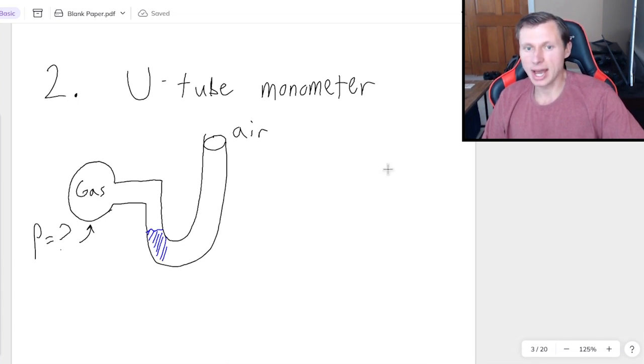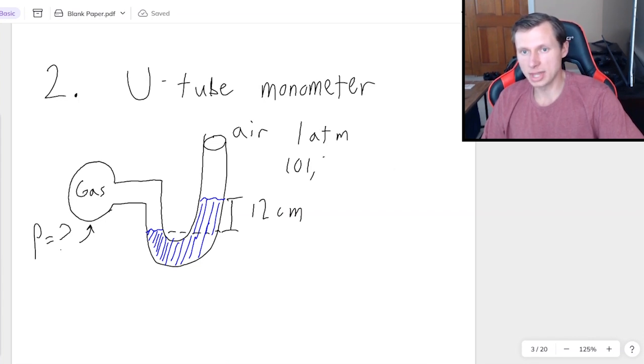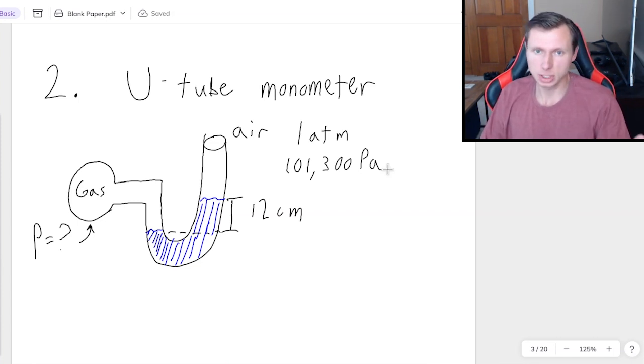And because the gas and air have different pressures, we actually get a height difference in the manometer. Let's say this height difference is going to be 12 centimeters. And again, the question is, what's the pressure in the gas? If we know the pressure in air is again, one ATM or 101,300 pascals. I'm going to be using pascals for this one. But one thing I do want to mention before I do any calculations, if this was a conceptual question, and the question just asked, which pressure is higher, the gas or air, I know it's going to be the gas.